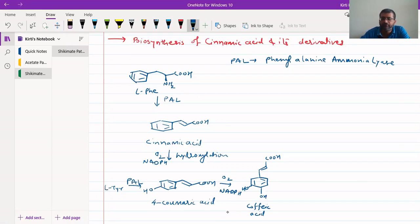Caffeic acid can further react with SAM. We have already seen what is SAM. SAM is S-adenosylmethionine. This is a very good methylating reagent, so it will provide a methyl group to this OH that we have newly added.